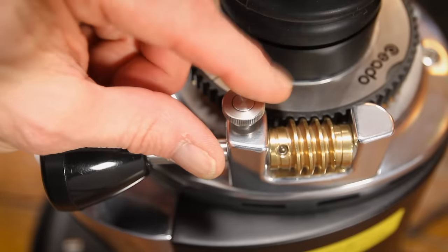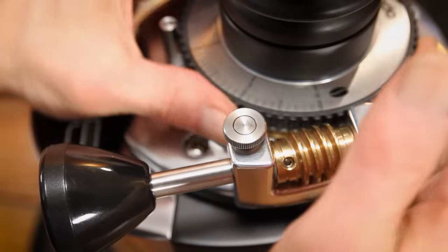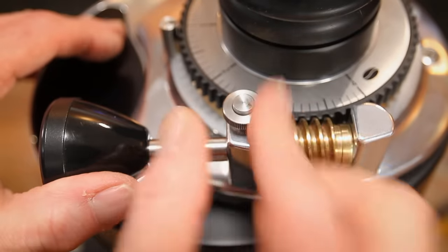For large grind size changes the worm gear can be disengaged. Turn the nut here, push down, and the gear releases allowing for free rotation of the adjustment collar. So it's quick to go from very fine espresso grinding up to coarse ranges for brew methods like drip, pour over, and press.